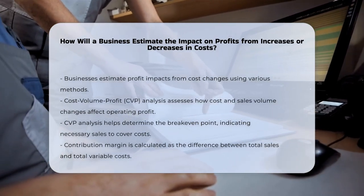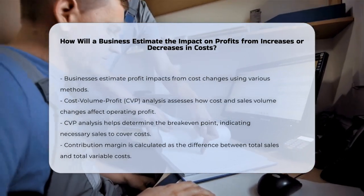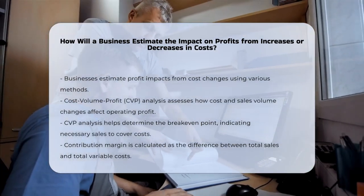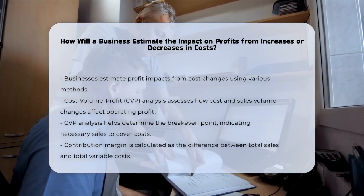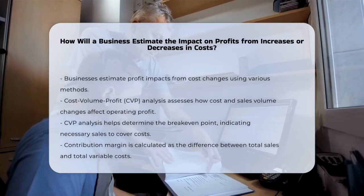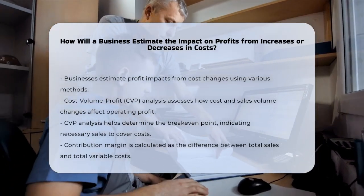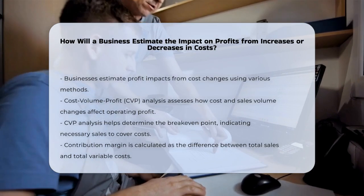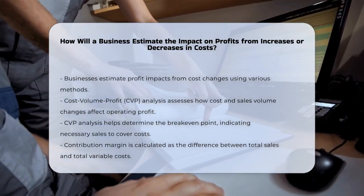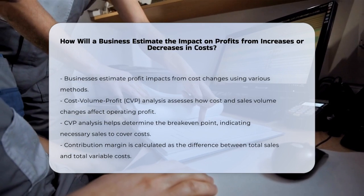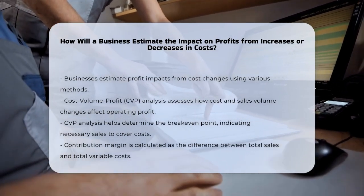To figure this out, businesses use several methods to estimate the impact of cost changes on their profits. One of the key methods is cost-volume-profit, or CVP analysis. This involves looking at how changes in costs and sales volume affect the business's operating profit. For example, CVP analysis helps you determine the break-even point — the number of units you need to sell to cover all your costs.